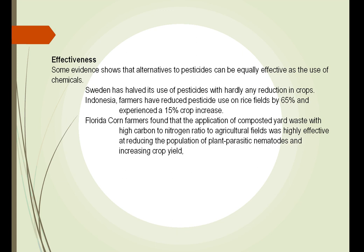Although the data is not strong, we have some indication that alternative pesticides can be equally effective as chemicals. In Sweden, they cut their use of pesticides in half and saw little difference in crop production. In Indonesia, they cut pesticide use by 65% yet still achieved a 50% crop increase. If you can control only the insect that attacks the plant, you'll have more success than with broad-use antibiotics. In Florida, composted yard waste was highly effective at reducing plant parasitic nematodes and increasing crop yield.